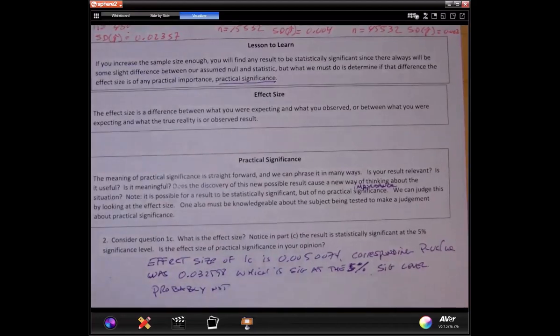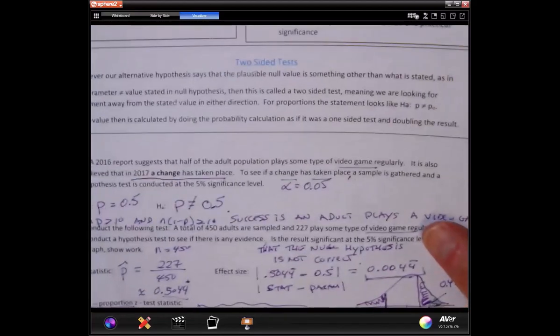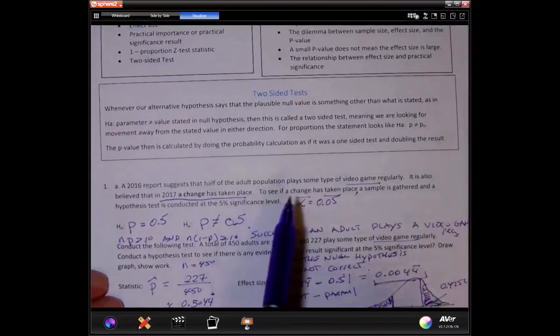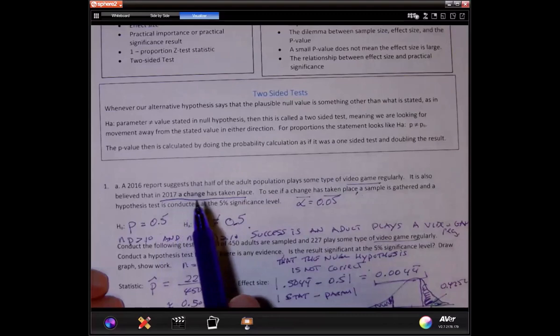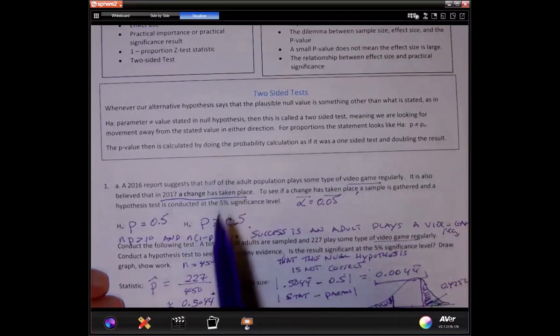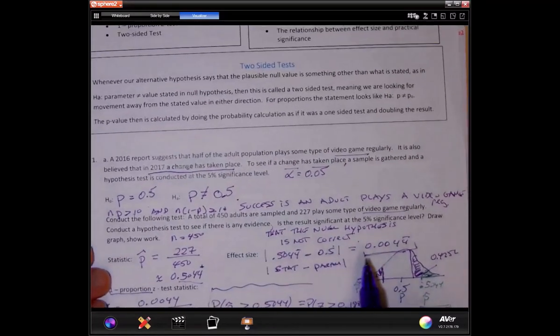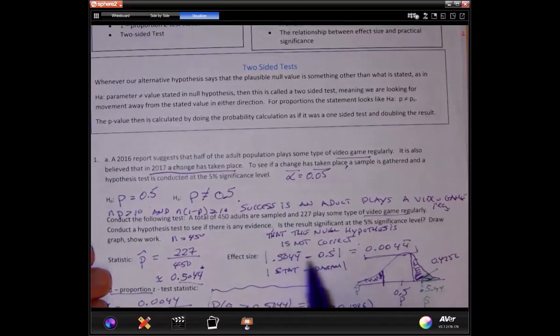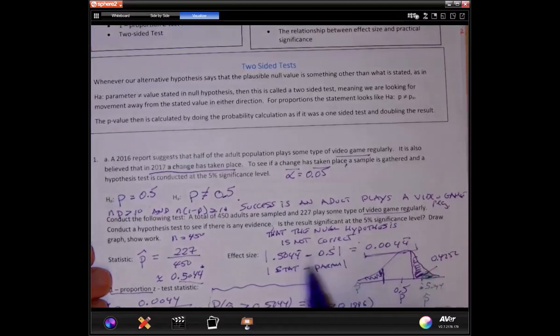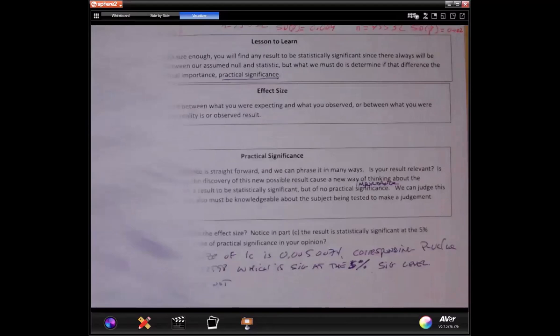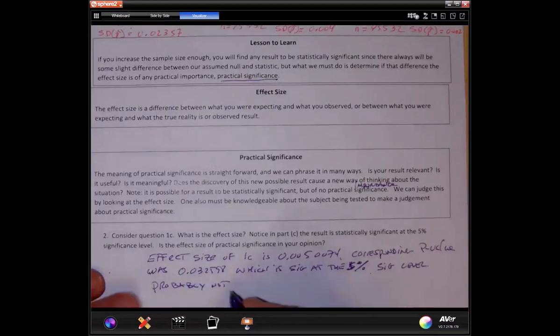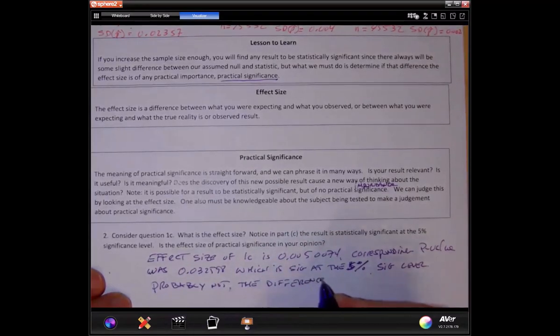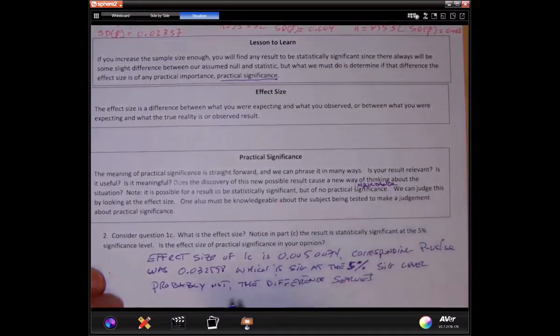Let's look back at what it was in question 1A. The 2016 report suggested that half the population play some type of video game regularly. It also believed that in 2017, a change has taken place. So what we're saying is, all we found was the change was small, if there is a change. Between the 0.5 to 0.447. So is that difference, even if there was that change, even if it's true, is that important? And most likely for this scenario, no, it's not important. So is the effect size practical? Probably not. This difference serves no practical purpose.